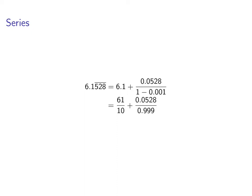If we clean that up, 61 over 10 plus 0.0528 divided by 0.999, and so that fraction with the decimals can change into 528 over 9,990. And if you make a common denominator, add and simplify, you'll end up with 20,489 over 3,330.